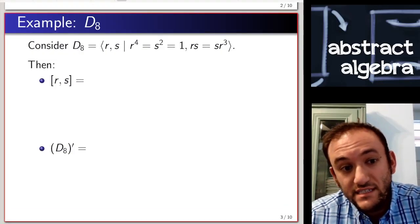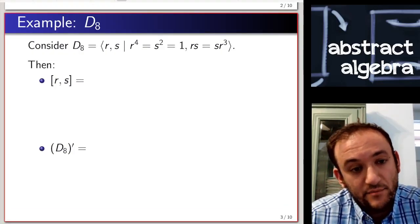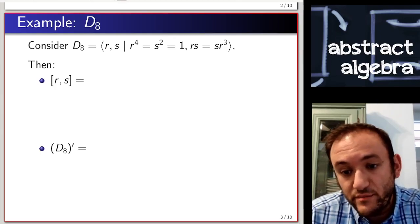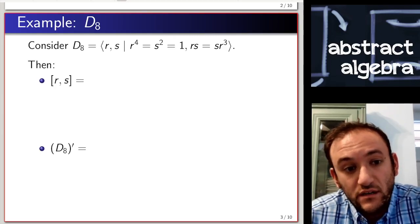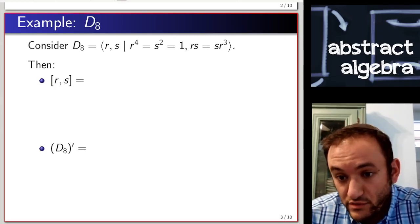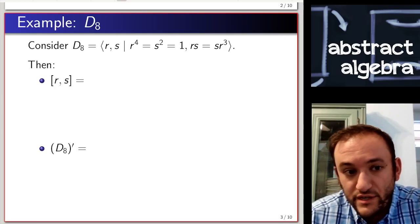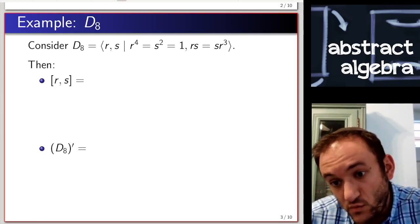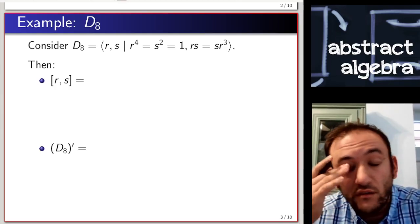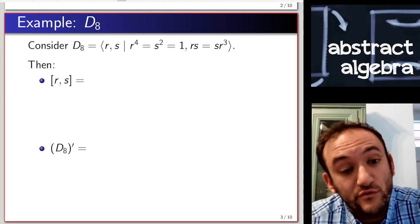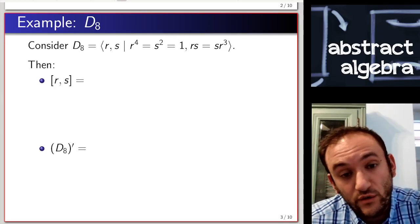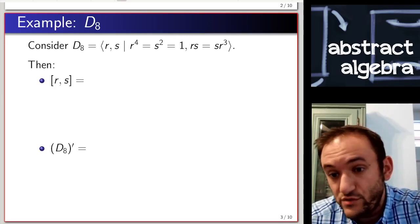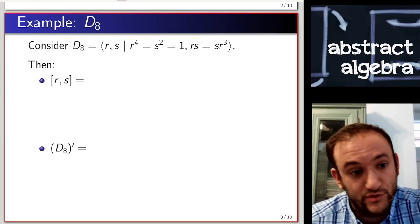Let's start with D8 as an example. D8 is the group of symmetries of the square. It's generated by r, a rotation by 90 degrees, and s, a reflection across one of the lines of symmetry. The relations are r to the fourth equals s squared equals one, and rs equals sr inverse, or sr cubed.